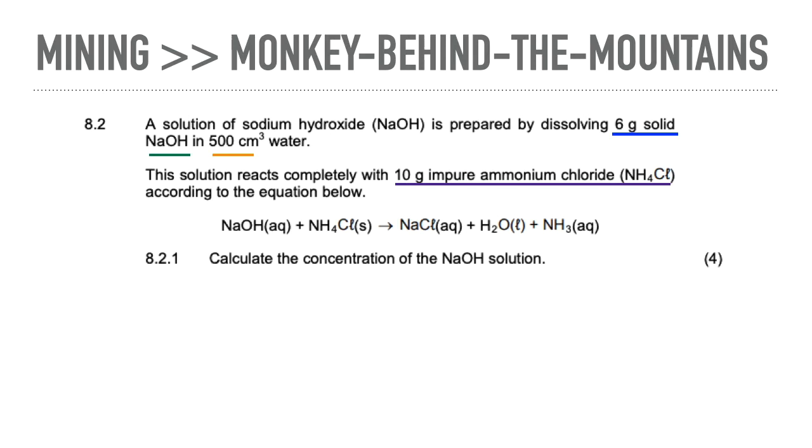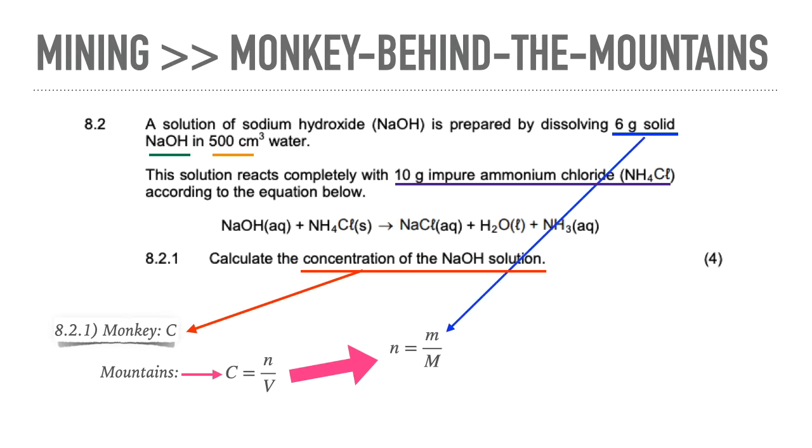So there's this little bit of information which is not necessary but it's still there where 10 grams of impure ammonium chloride is reactant with it. So where does the monkey behind the mountain leave you? The concentration is the monkey. So we need a formula to find it. The formula is c equals n over v. n has to do with your number of moles, but for number of moles I need mass over molecular mass. Oh, the mass is 6 grams, the molecular mass we get from it being NaOH, and lastly the volume of water, well there I've got all the variables that I need. Mining, mining, going over to monkey behind the mountain.